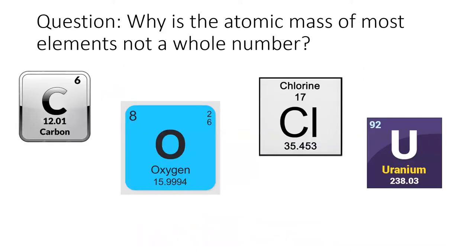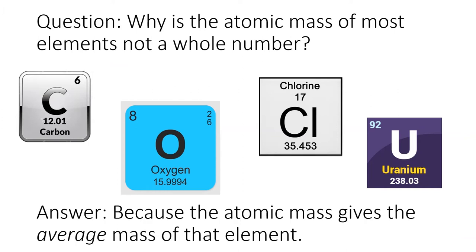Looking at the atomic masses on the periodic table, you might wonder, why are most of them decimals instead of whole numbers? Well, the answer is that the atomic mass is the average mass of an atom of that element.